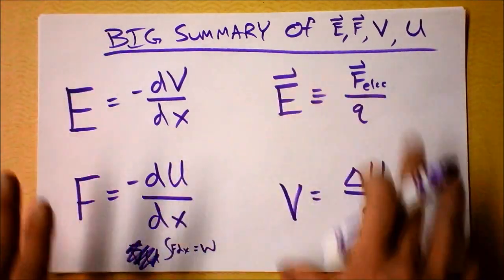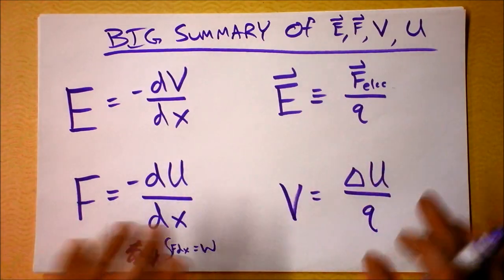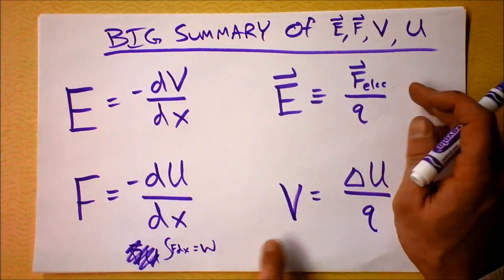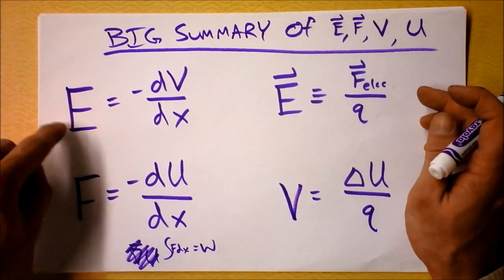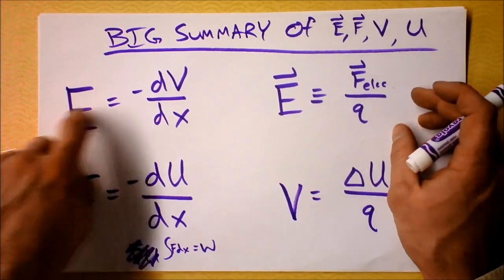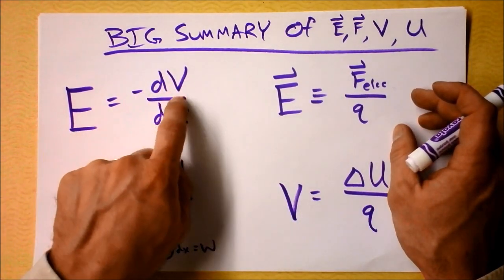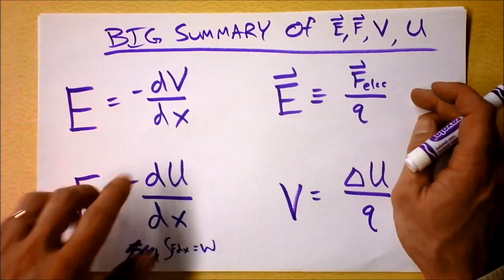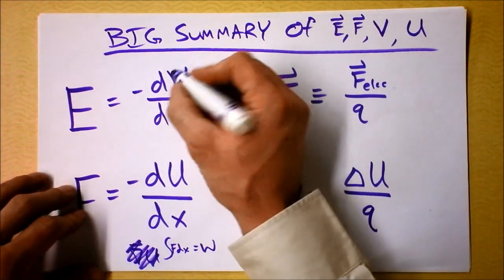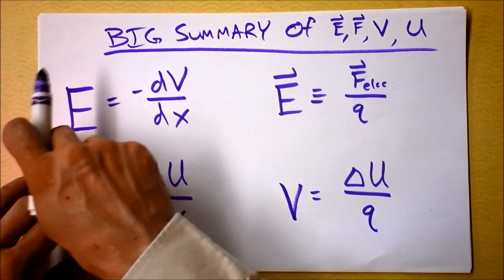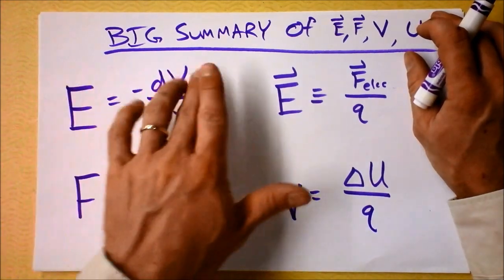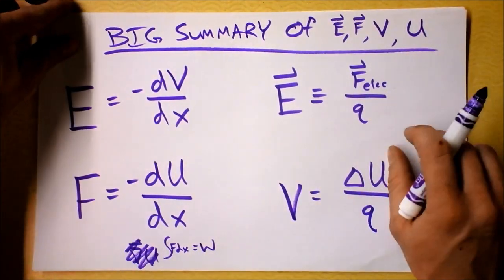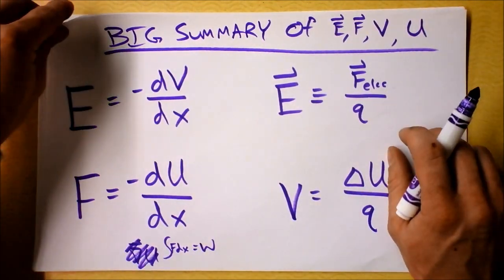There's a beautiful symmetry that helps you summarize each of these things. Notice that potential energy and electric potential are both scalars. The electric field is a vector, and it comes from a scalar, so we must be doing something very interesting to this electric potential in order to get a vector field out of it. The electric field and the scalar electric potential are related in a really interesting calculus way.